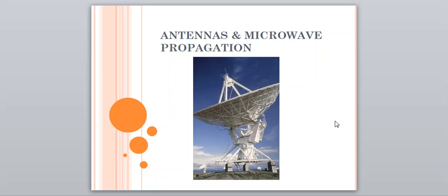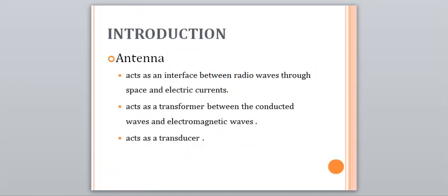So starting with the introduction, what is antenna? Antenna is a device used as a transmitter and receiver of electromagnetic waves. It also acts as an interface between the radio waves and the electric current through space. Radio waves is nothing but electromagnetic waves and it also acts as a transformer between the conducted waves and electromagnetic waves.